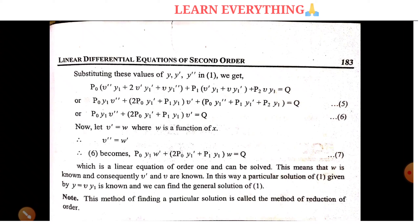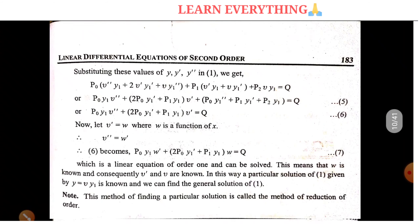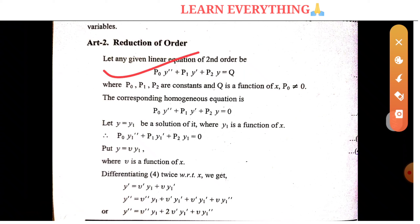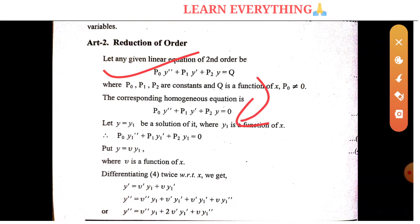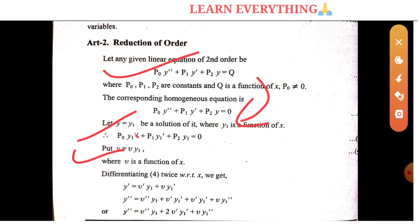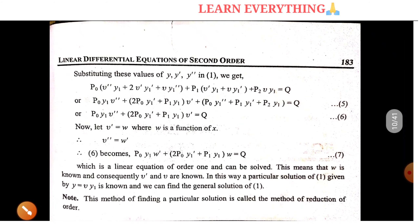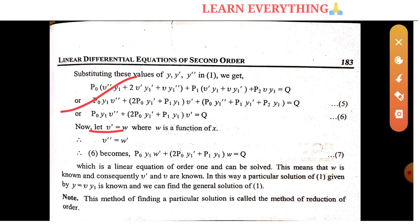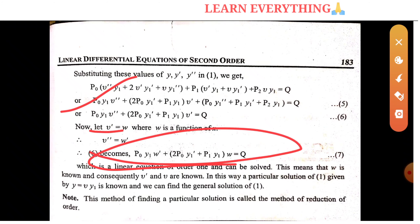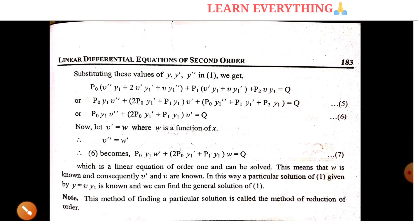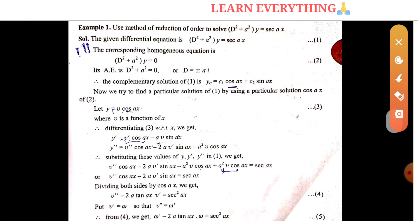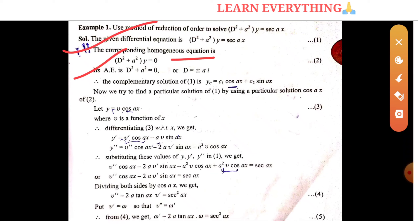This method of finding the particular solution is called the method of reduction of order. The second order equation is reduced to a first order equation, and then we can find out the solution. We have to do the corresponding homogeneous equation, put in y1, differentiate, and find y-dash and y-double-dash values. This gives us a first order equation from which we find the particular solution.